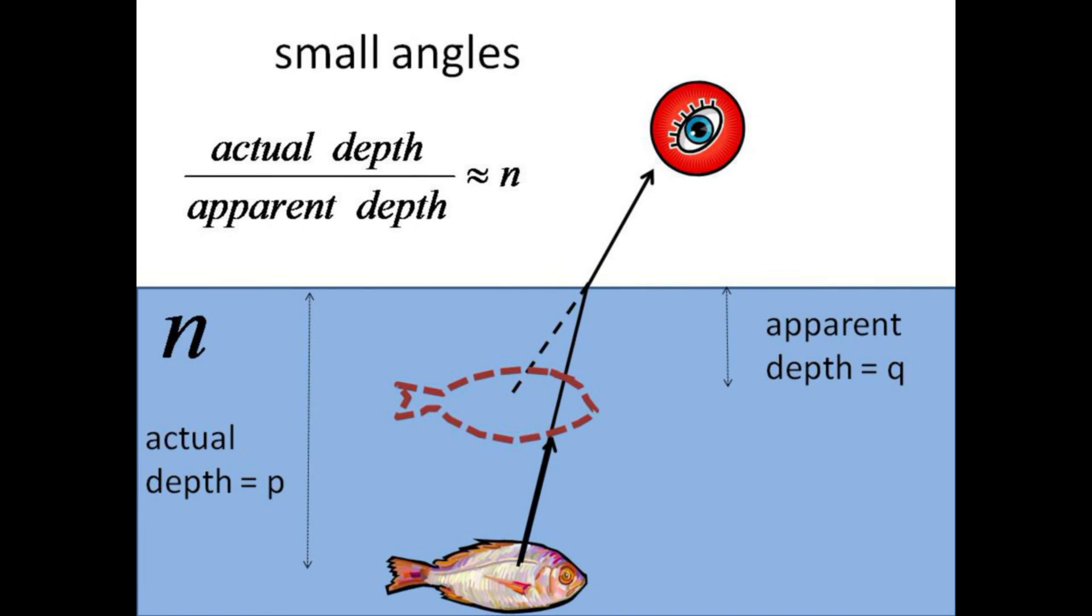If you're looking nearly straight down into the water, that is, at small emergent angles, the ratio of the actual depth to the apparent depth is equal to the index of refraction of the water, approximately 1.33. For example, if you wish to wade in a pool that appears to be 1 meter deep, you should plan on the actual depth being 1.33 meters.